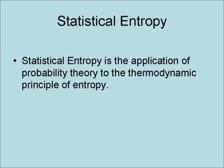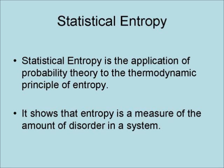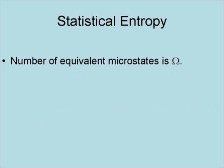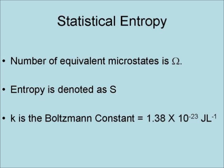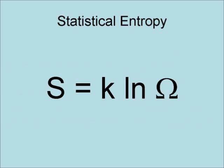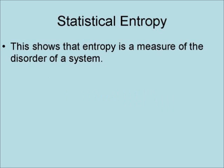Statistical entropy is the application of probability theory to the thermodynamic principle of entropy. It shows that entropy is a measure of the amount of disorder in a system. The number of equivalent microstates, or the number of possible ways for a given condition to occur, is denoted as omega (Ω). In this formula, entropy is denoted as S, and K is the Boltzmann constant. This results in the formula S = K · ln(Ω).